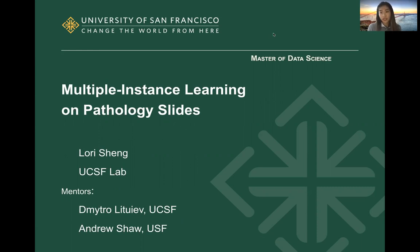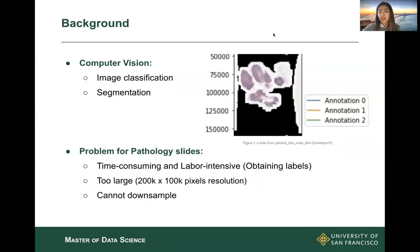The project I'm working on is using multiple instance learning on pathology slides. When it comes to applying computer vision in the medical field, most tasks involve either image classification for diagnosis or segmentation to identify and separate regions. However, in pathology cancer detection, this is not always possible.